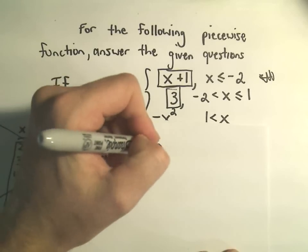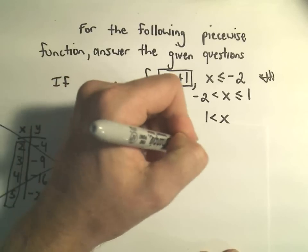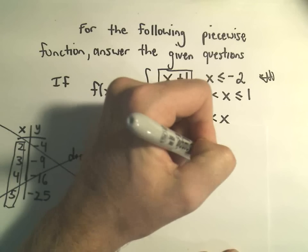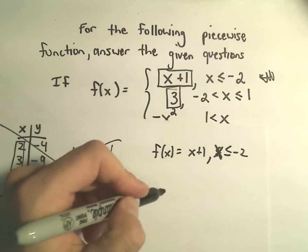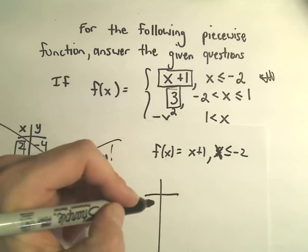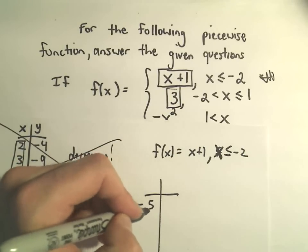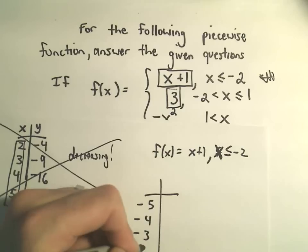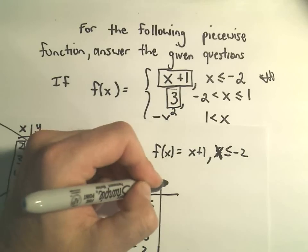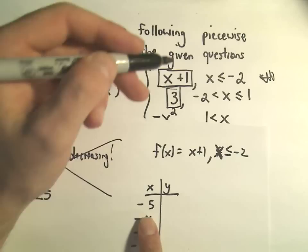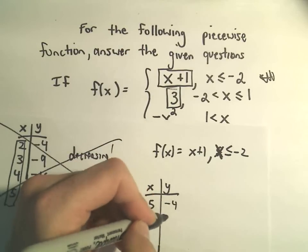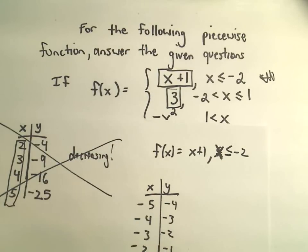But if we look at the part x plus 1, if x is less than or equal to negative 2, maybe let's use a few points. So how about negative 5, negative 4, negative 3, negative 2? Well, if we were to plug these values in, it says just add 1 to them. So you would get negative 4, negative 3, negative 2, negative 1.